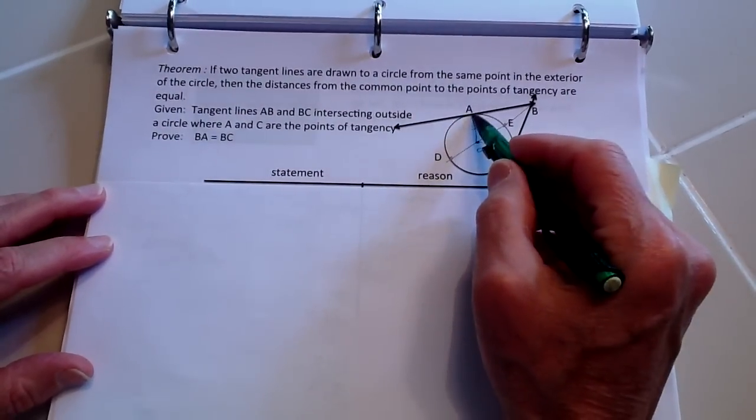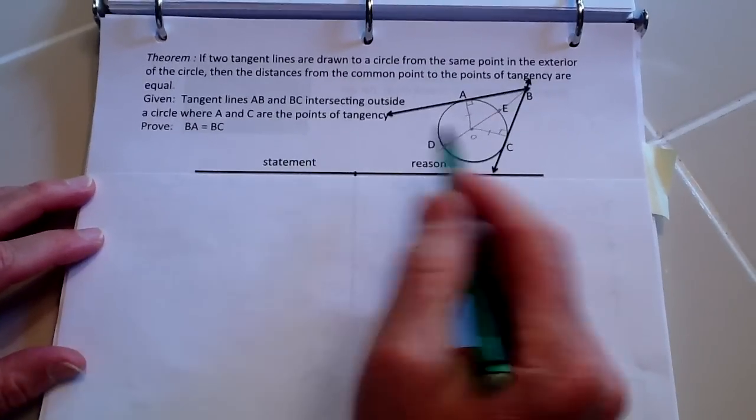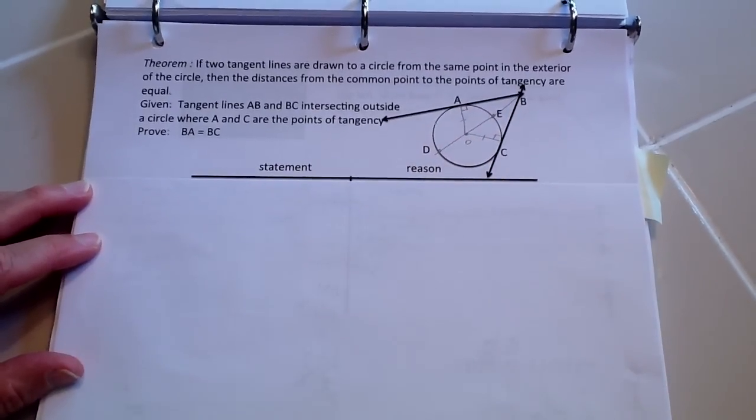In other words, that means AB is going to equal BC. So we have AB equals BC; that's what we're looking to prove.